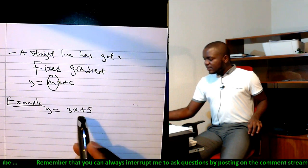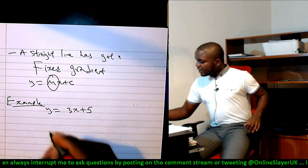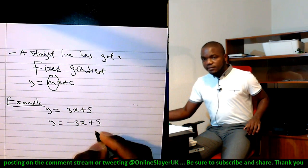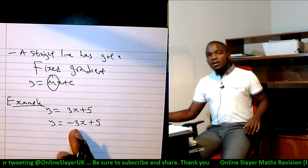What does the gradient tell us about a line? If I give you y equals minus 3x plus 5, there should be a difference between this and this based on the fact that one has a positive gradient and this has a negative gradient.